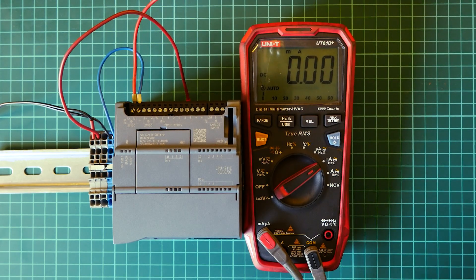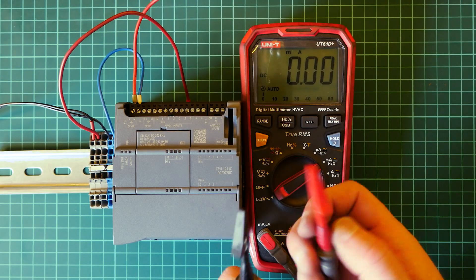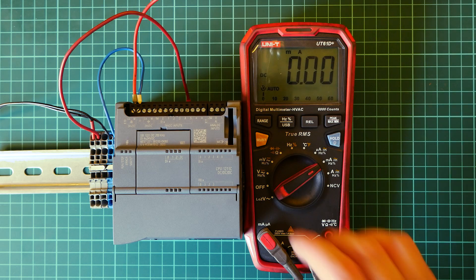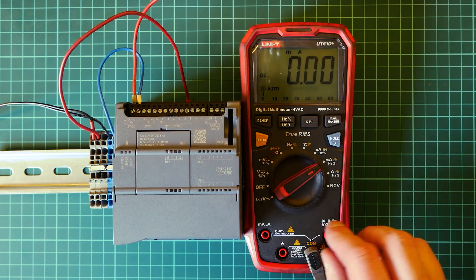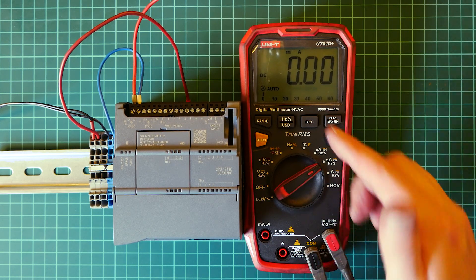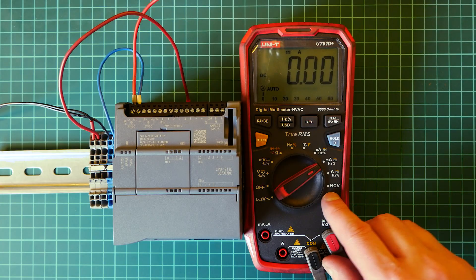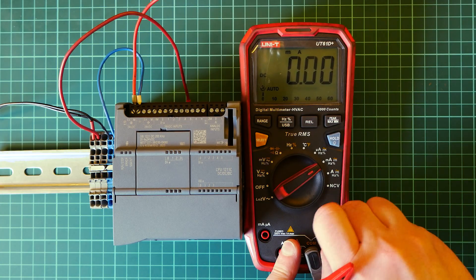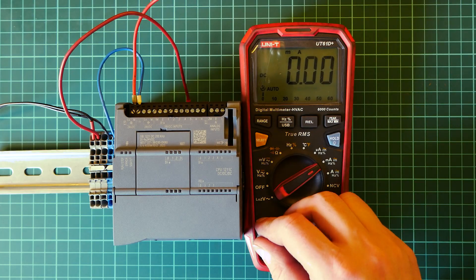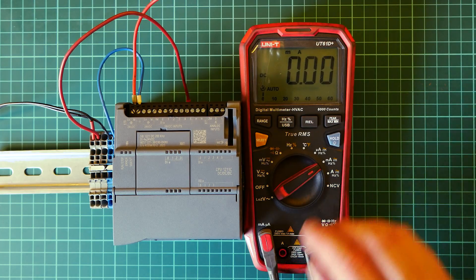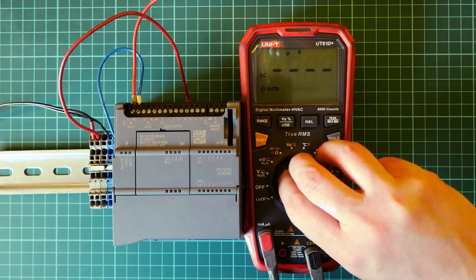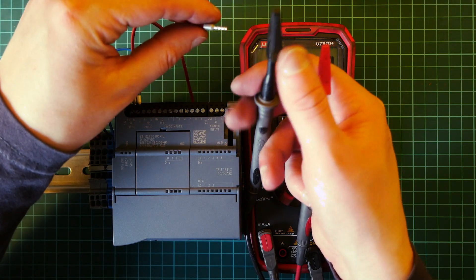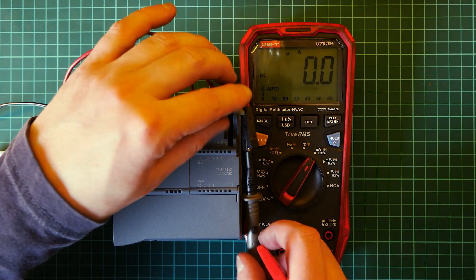Now I want to measure how much current is required for this PLC. To power it we need 24 volts DC. I just want to see how much current it takes. Now there is no security when the probe is in voltage mode. There is no fail safe. But actually it's normal, not actually an issue.